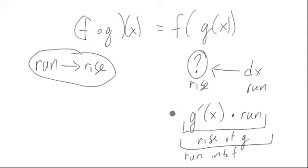So how do you compute the rise from this run that's going into f? Well, you simply multiply it by the slope of f. That's the rule for how to go from run to rise. You multiply it by the slope. So f prime of, well, the derivative of f at a particular input value of f.